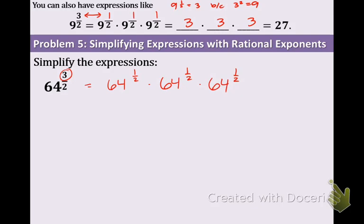And we should know, actually we talked about this in one of my extra examples just on the last slide, 64 to the 1 half equals 8 because 8 squared equals 64. So that means we can just replace all of these by 8 and that gives us 512.